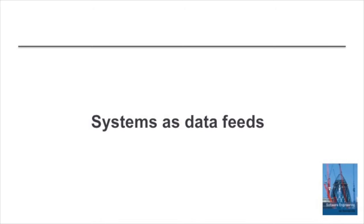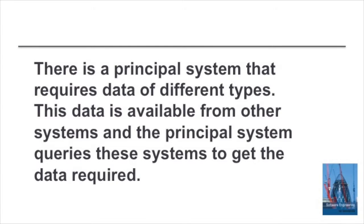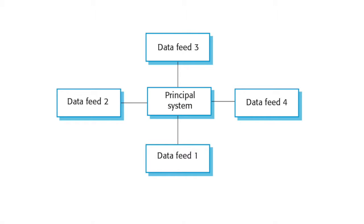The first pattern I want to talk about I've called systems as data feeds. This occurs when we have a system of systems that takes data from a whole range of other systems. We may have a principal system — such as a system that manages car licensing registration — and it takes data from systems such as a car insurance system. This diagram illustrates a situation where we have a central principal system taking data from four other systems.